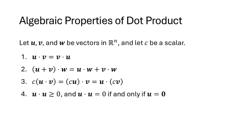The dot product has some nice algebraic properties. It's commutative: u dot v equals v dot u. We have a distributive property: (u + v) dot w equals u dot w plus v dot w. We have compatibility with scalar multiplication: c times u dot v equals c times (u dot v), which also equals u dot (c times v). And u dot u is always greater than or equal to zero.